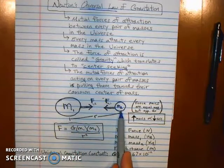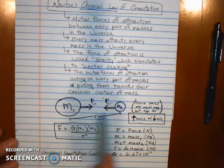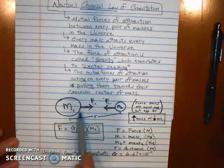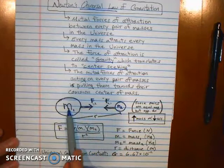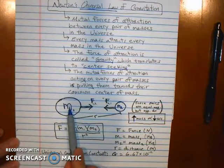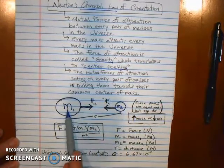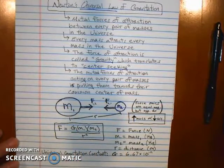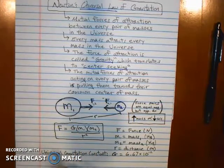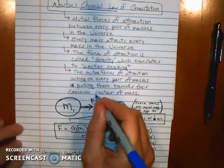And it turns out the common center between any two masses, if one is relatively small by comparison to the other, that common center is roughly near the center of the larger mass. Like, the common center of mass between the Earth and the sun is still inside the sun. And we're going to explore that common center a little bit more.